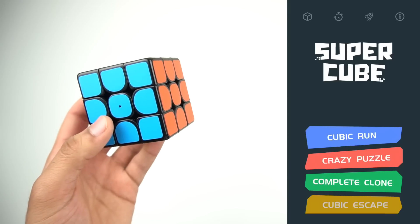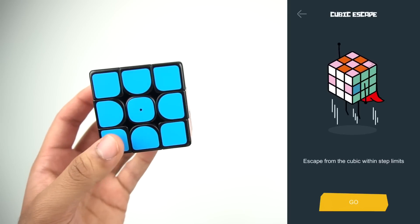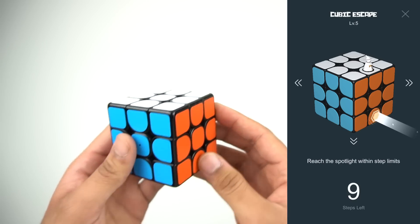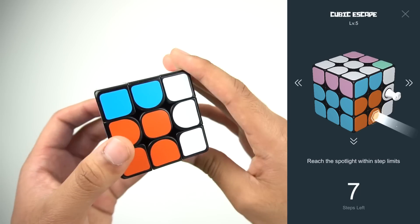Alright, so the last one is another fun one and really easy to progress through. Basically, you have a limited number of moves to get this marker or person-looking thing into the target position.